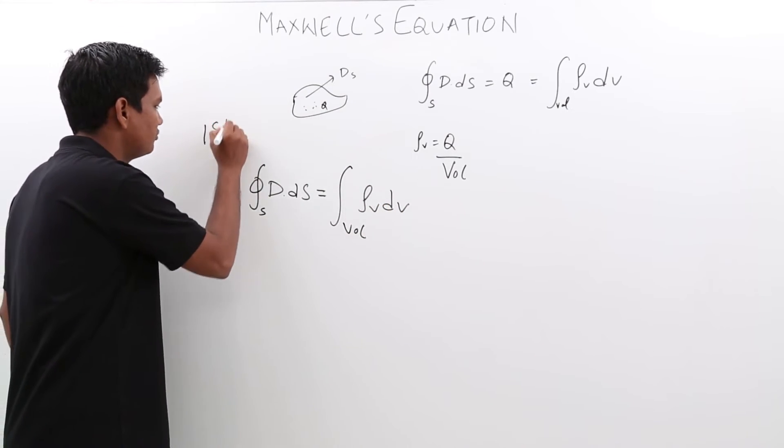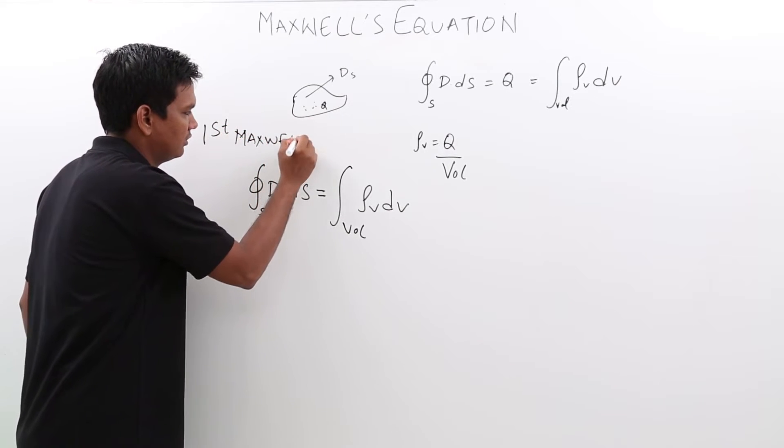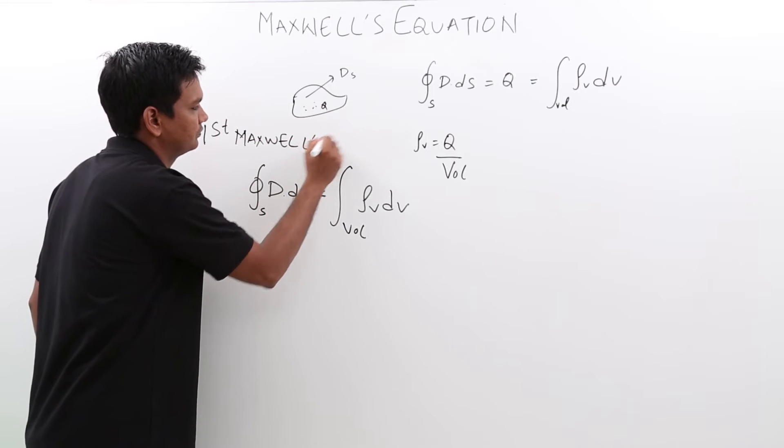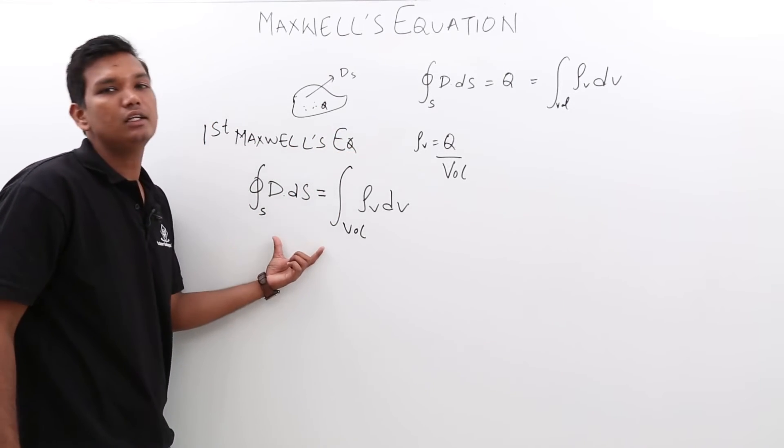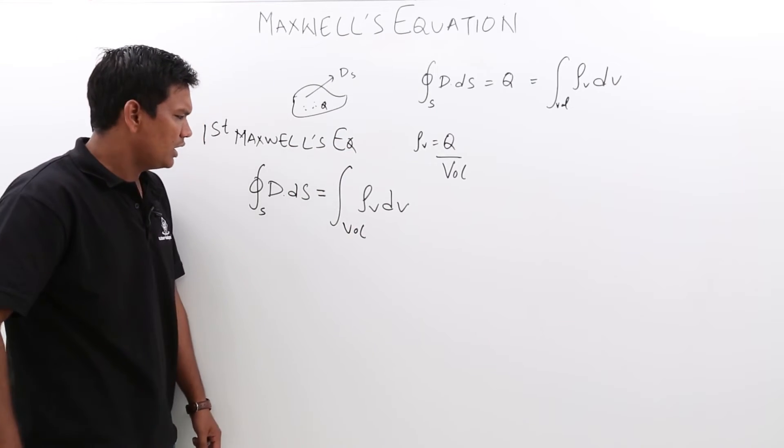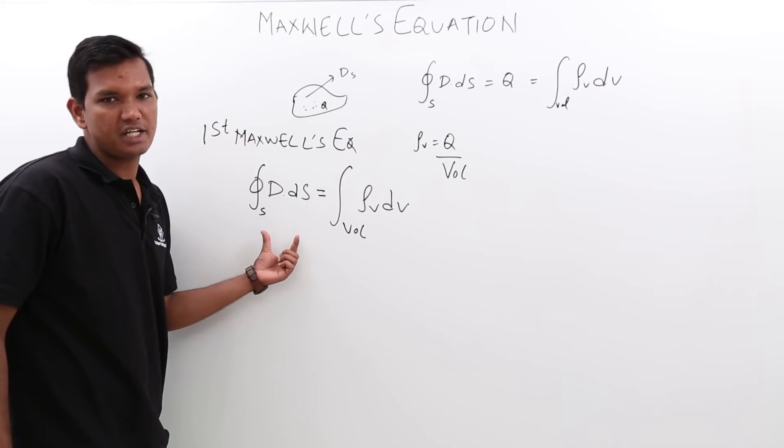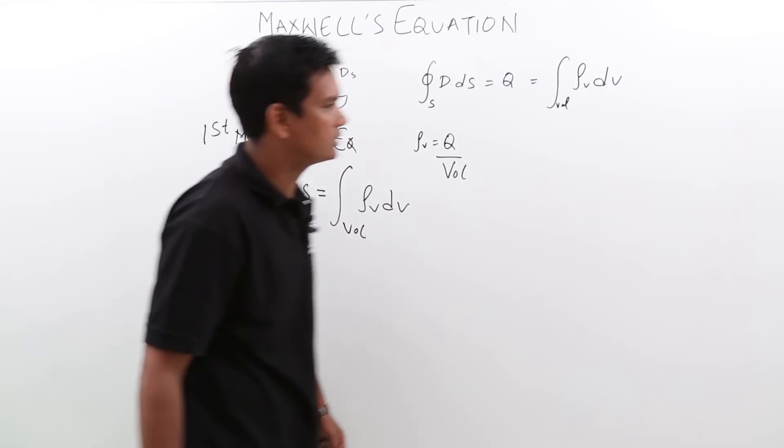Let me call this the first equation. This is called the integral form of Maxwell's equation. Now, if I apply the Gauss divergence theorem on this—let us recall what is Gauss divergence theorem.